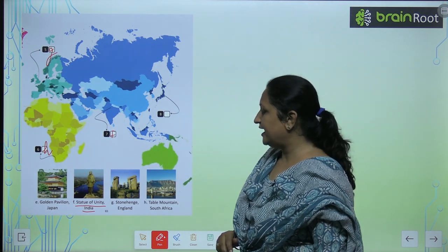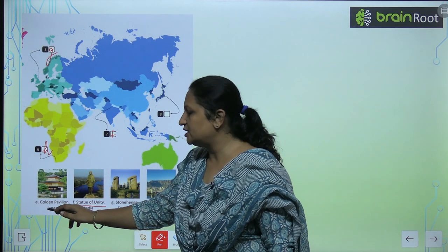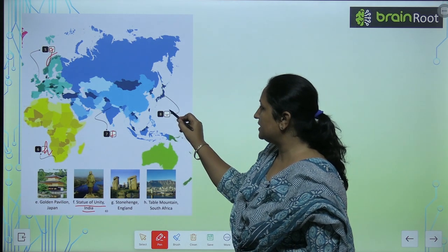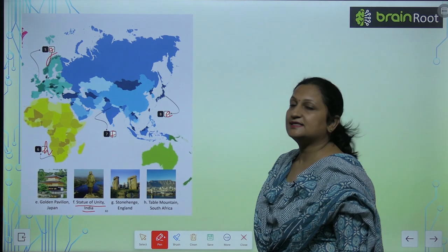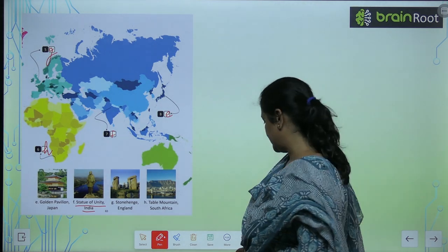And for number eight, we will write Golden Pavilion, Japan. So here will come part E. Like this, we will complete this page.